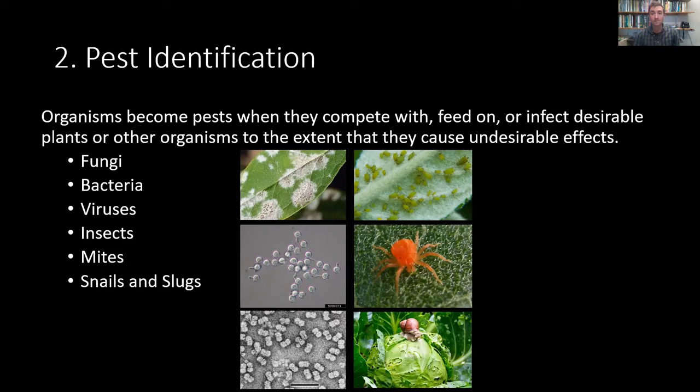Another broad category of things that eat your plants are snails and slugs — these are mollusks. They tend to do damage to tender herbaceous plants like lettuce or cabbage in your veggie patch, but could also cause problems in some tender herbaceous perennial plants. There are some predatory snails and slugs, some native species, some invasive species. Especially in freshwater aquatic ecosystems, we always want to make sure we're not introducing any harmful snails and slugs into new landscapes.